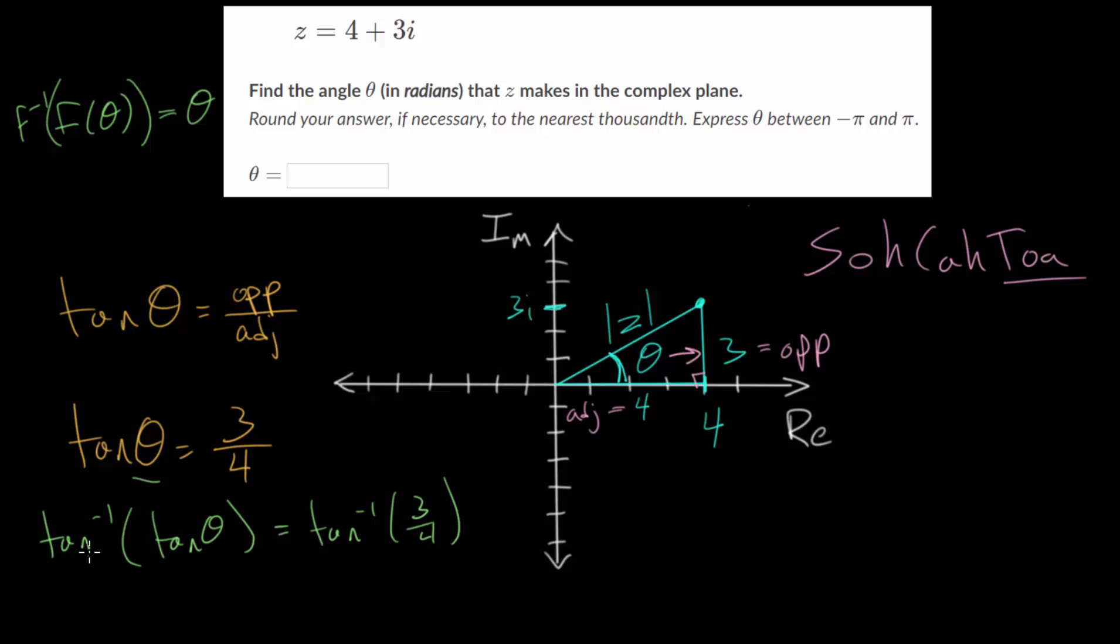And over here on the left hand side, the tangent and the inverse tangent essentially cancel each other out. So that we get theta is the inverse tangent of three fourths. And for this, we need to use a calculator.